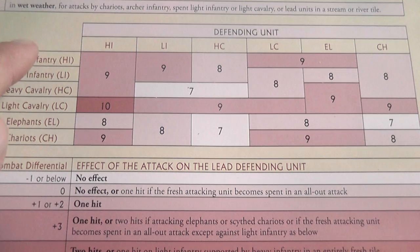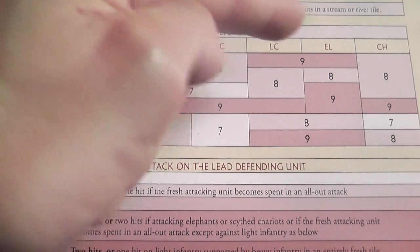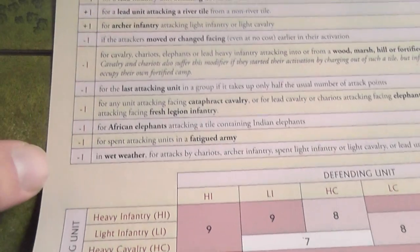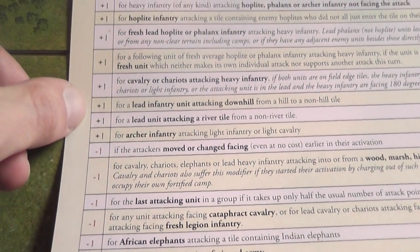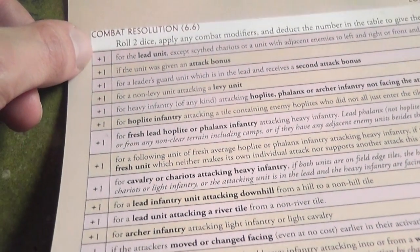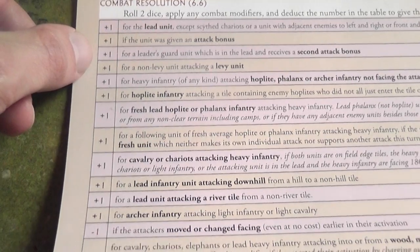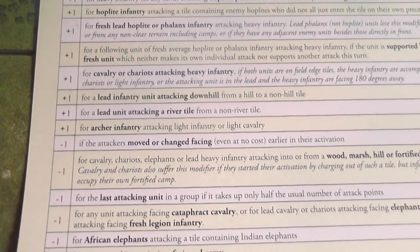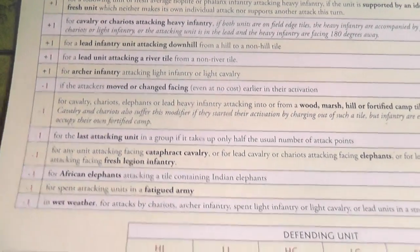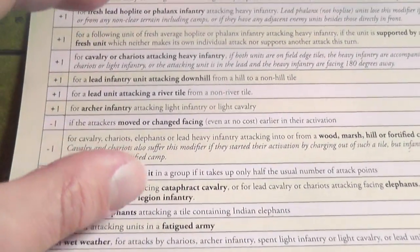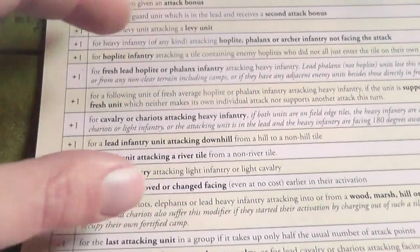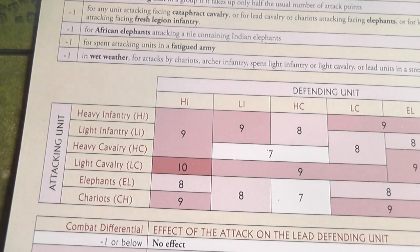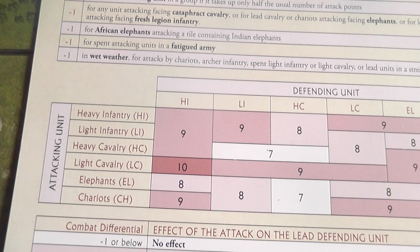To resolve combat, you cross-reference the attacking unit type with the defending unit type to find the number to hit, then roll 2d6 and apply all relevant modifiers. The modifier list is quite long, but don't be scared — after the first couple of combats it becomes second nature. You'll quickly identify which modifiers apply to each situation, and you'll realize how much depth this list adds, since exploiting as many favorable modifiers as possible is one of the most crucial aspects of the design.